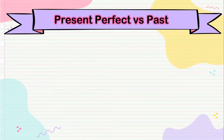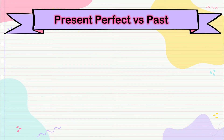Present perfect versus past. So let's remember the meaning of present perfect and past. Past is a repetition and duration that started in the past and finished.